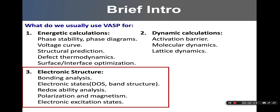As a beginner of DFT, you may sometimes be confused by the terminologies and different types of plots of electronic structure generated from density functional theory. You're probably going to be confused by terms like bond analysis, electronic states — which includes density of states and band structure — as well as results of capability analysis, polarization, magnetization, and electronic excitation states. In today's video, I'm going to summarize some typical electronic structure representations you'll see in DFT papers and give a brief introduction on how to understand them.